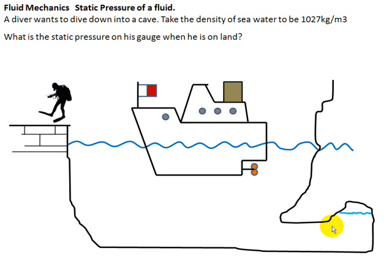Let us now consider a situation at the seaside. Sea water has a density of 1027 kilograms per meter cubed. To find the static pressure in its spawn due to it, we must use this value of density.